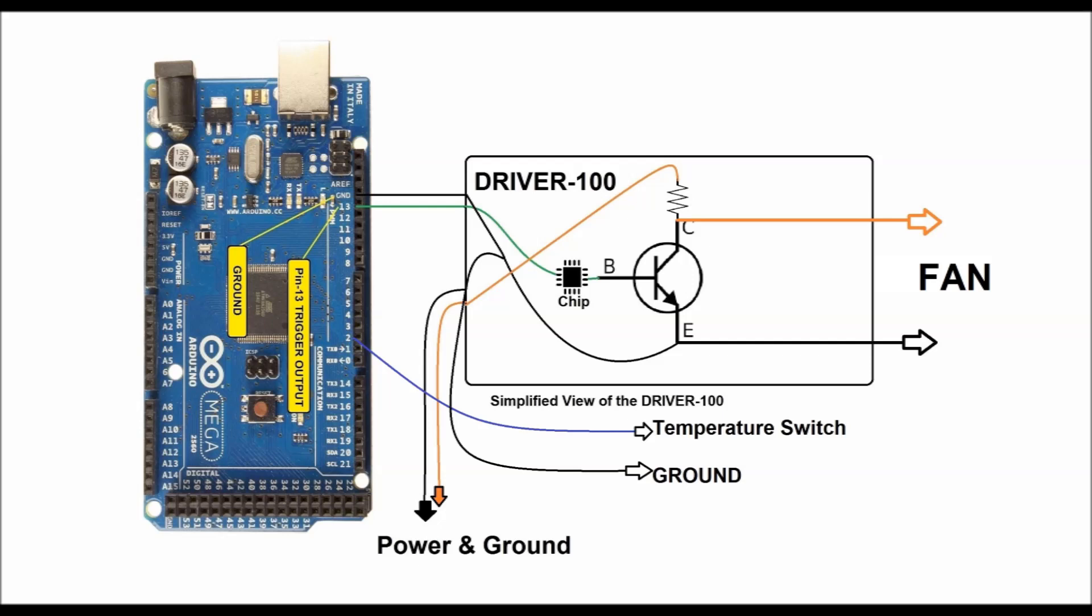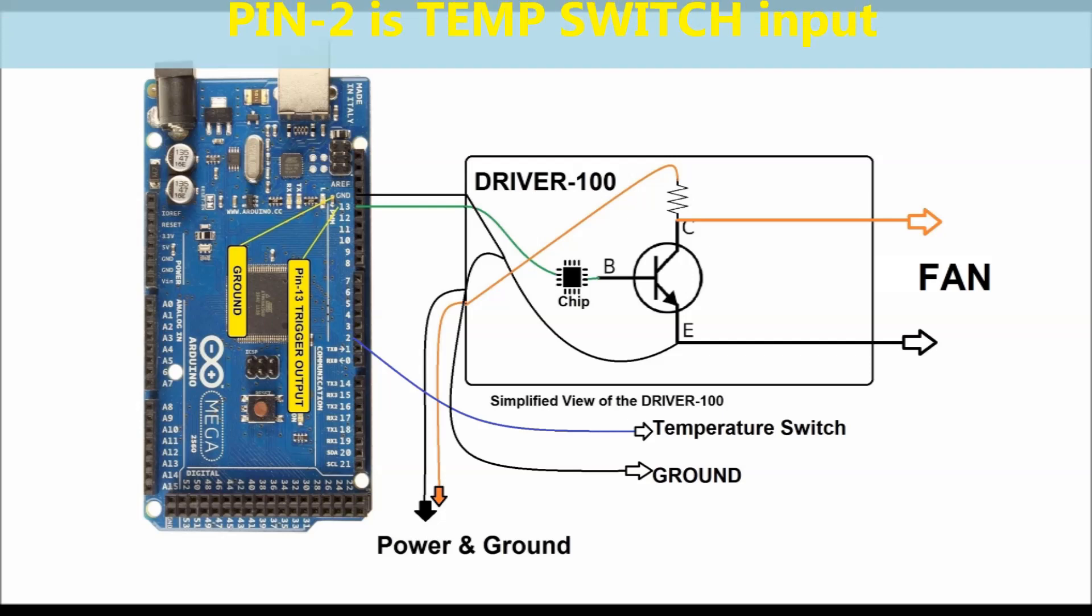A quick glance at the wiring diagram, we can see the driver 100 board attached to pin number 13 and ground. The green lead is the one that actually controls the output transistor. The driver 100 board, that module is connected to the fan, and that's the one that's going to control the motor directly.